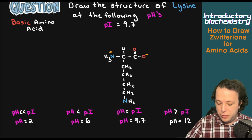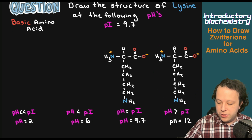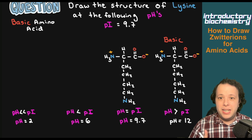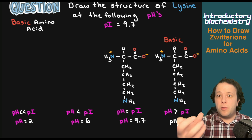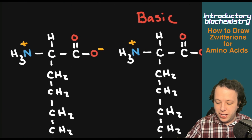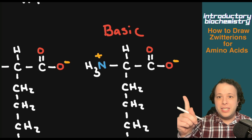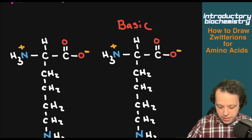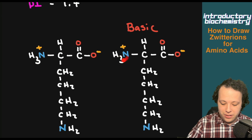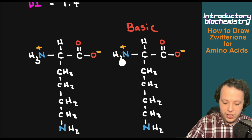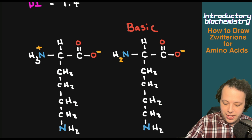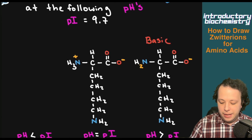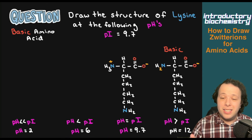Let's fill in the different structures. Going to a higher pH — basic conditions — at pH 12 which is much higher than the isoelectric point, we remove hydrogen. The only place available is the amino group on the side chain. We remove it from that location, taking away the charge, resulting in H2N — and that is a basic amino acid.